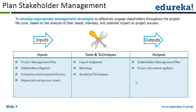Once the analysis is done, you move into planning stakeholder management. You develop an appropriate management strategy to effectively engage stakeholders throughout the project lifecycle based on the analysis of their needs, interests, and potential impact on project success. Inputs are the project management plan, stakeholder register, EEF, and OPA. Expert judgment, meetings, and analytical techniques are the tools. Outputs are project document updates and the stakeholder management plan.